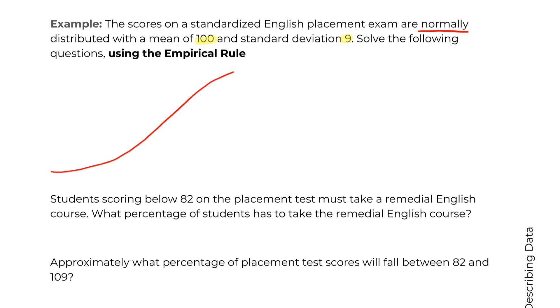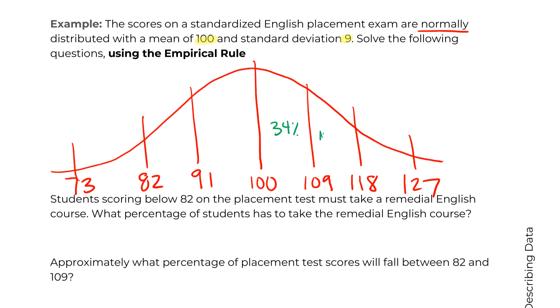So the first thing we're going to do is draw a picture, because they told us to use the empirical rule. Again, I'll make this short and flat. That way we can just see everything that's going on. So we're going to do 100, and then three standard deviations out to either side. It doesn't have to be a great drawing. So we'll add standard deviations to the right, subtract standard deviations to the left. And then we'll input those different percentages, the 34, 13.5.